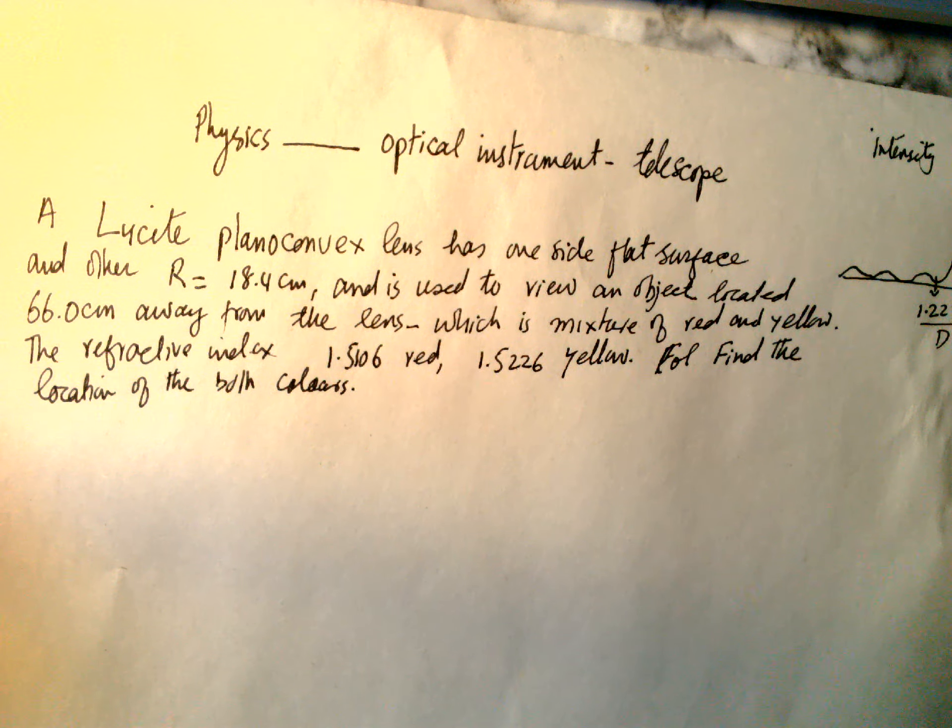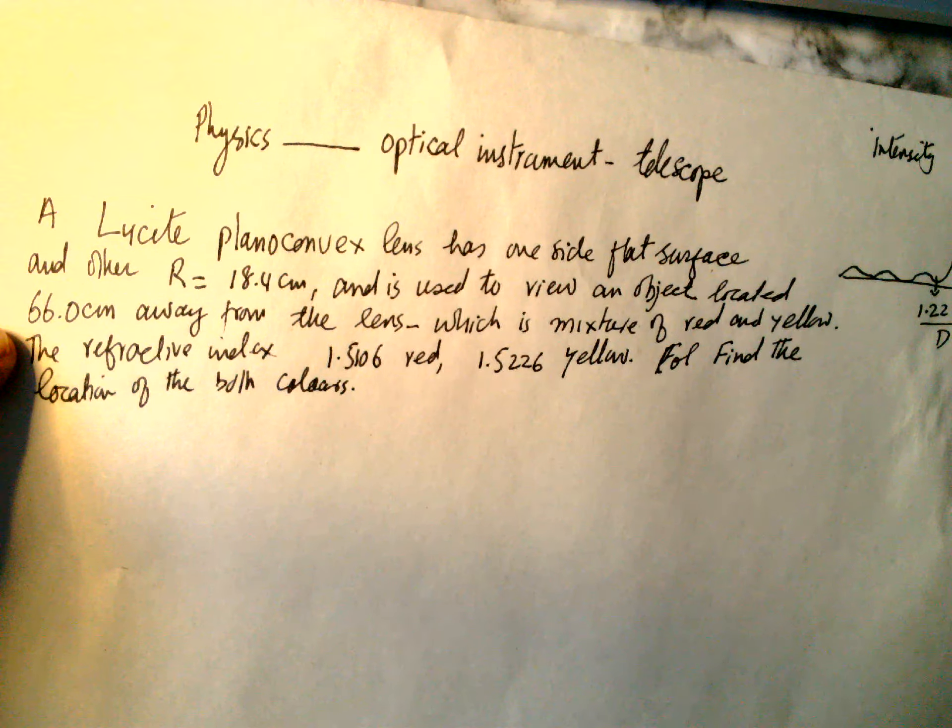Hello, Physics: Optical Instruments - Telescope and Microscope. The problem is a lucite plano-convex lens has one side flat surface and the other curved with radius of curvature 18.4 cm, and is used to view an object located 66 cm away.